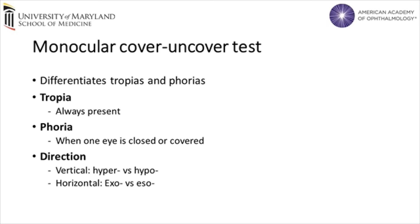If the eye deviates upward it is a hypertropia, while if it deviates downward it is a hypotropia, and if it deviates outward it is exotropia, and if it deviates inward it is esotropia. The same nomenclature applies for phorias.